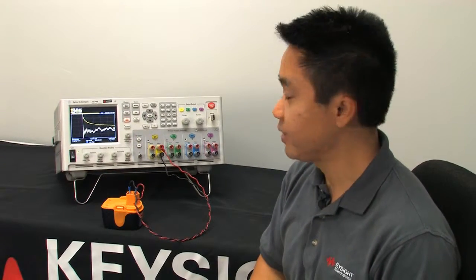So this has been a video to show how to use the N6780 series SMU as an electronic load. Thank you very much for watching. If you want to get more information, please visit Keysight.com. Thank you.